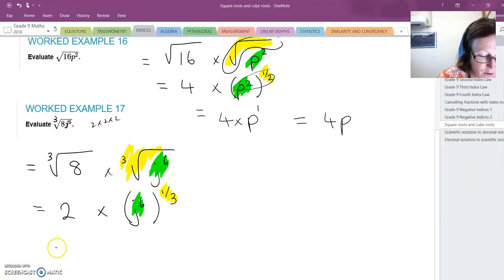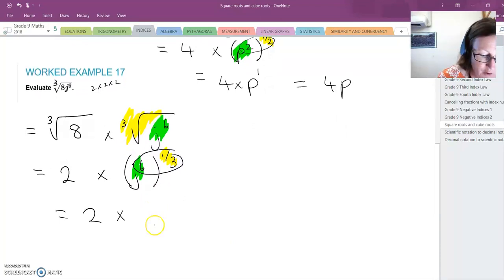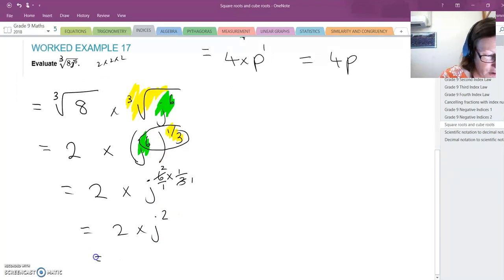What I then do is say that's 2 times—index law 4 says I times the indices, so I've got j to the 6th times a third. If I look at what I do there, 3 goes into that twice, 3 goes into that once, so it's 2 times j², which is just 2j².